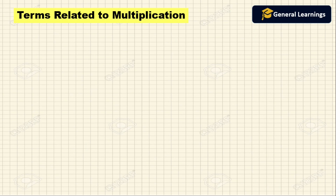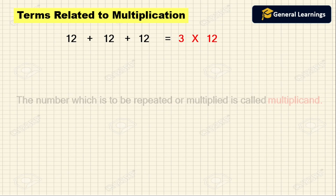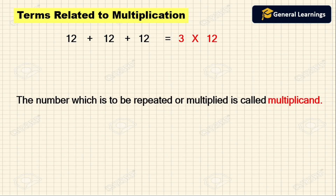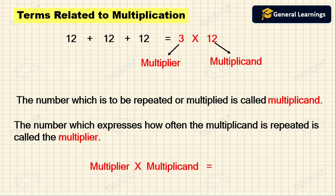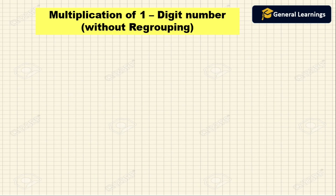Multiplication is a repeated addition. For example, 12 plus 12 plus 12 can be written as 3 into 12. The number which is to be repeated or multiplied is called the multiplicand. Here, 12 is repeated, so 12 is the multiplicand. The number which expresses how often the multiplicand is repeated is called the multiplier — so 3 is the multiplier. Multiplier into multiplicand gives us the product.